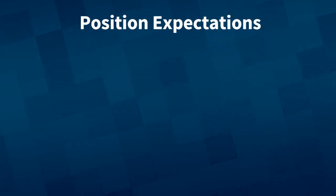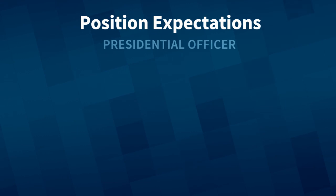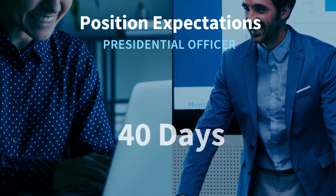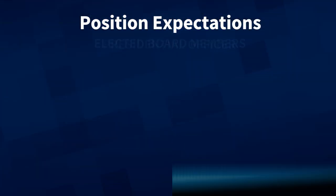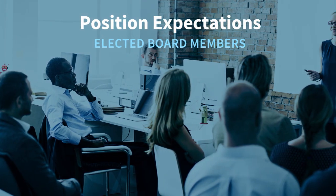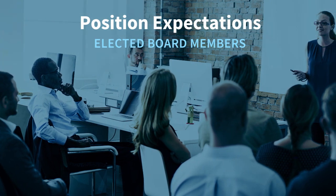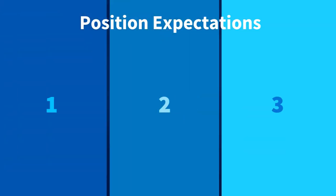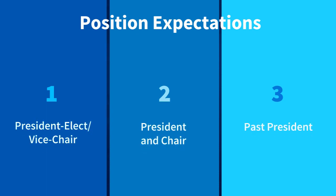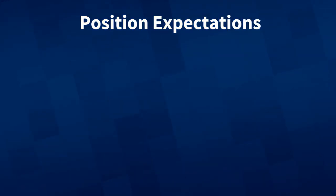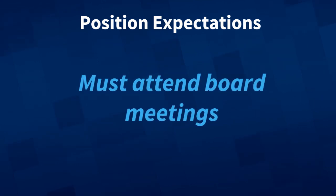The President-Elect commitment has been around 40 days of virtual and in-person meetings in the past, though that has recently been less due to the pandemic. For the elected Board Member, speaking engagements are distributed among all officers and Board Members. The Board Member term is three years long. The Presidential term is also three years: year one as President-Elect and Vice Chair of the Board, year two as President and Chair of the Board, and year three as Past President. It is expected that Board Members and the President-Elect will attend all Board meetings, either virtually or in person.